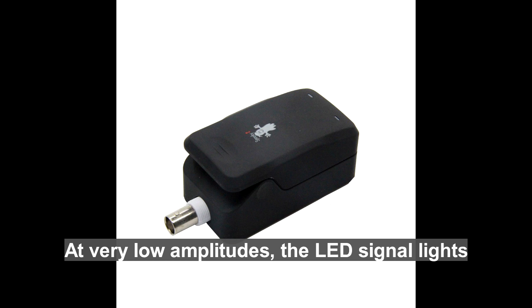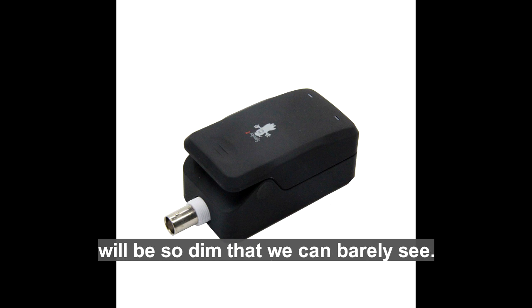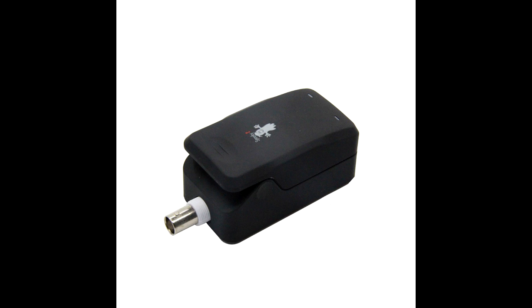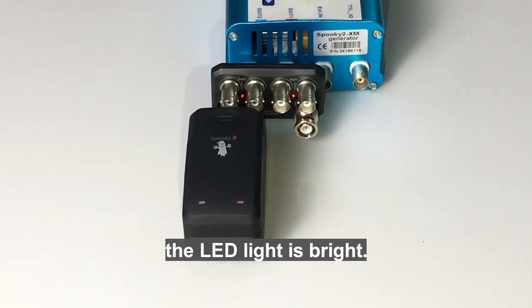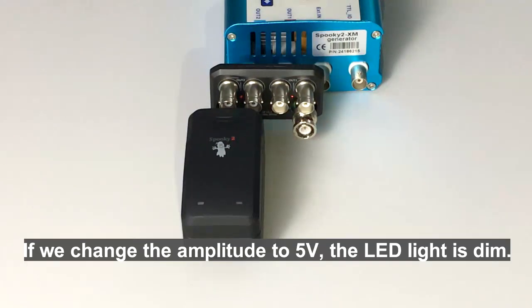At very low amplitude, the LED signal lights will be so dim that we can barely see them. For example, we run a 40 kilohertz with 20 volt amplitude - the LED light is bright. If we change the amplitude to 5 volts, the LED light is dim.